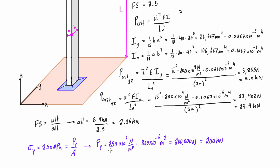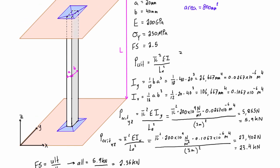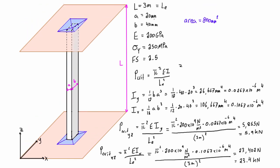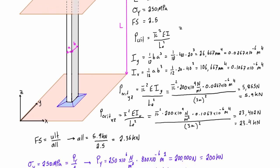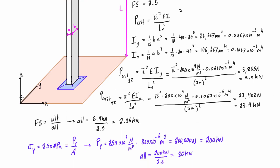Using the same factor of safety, the allowable load for yielding = 200 kN / 2.5 = 80 kilonewtons. So we will definitely buckle before we yield — at 5.9 kN we buckle, far below 80 kN. This makes sense because this column is 3 meters long and very slender. Slender columns are prone to buckling, and in this case it buckles in the YZ plane first, before the XZ plane and before yielding.